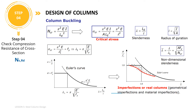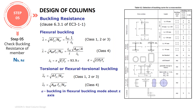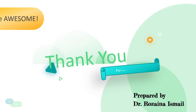In Step 4, we need to calculate the critical stress, slenderness ratio, radius of gyration, and non-dimensional slenderness in order to determine the compression resistance of cross-section NcRd. In Step 5, we need to calculate the reduction factor in order to determine the buckling resistance of member NbRd. The reduction factor must be less than or equal to 1. The reduction factor depends on the imperfection factor for the respective buckling curve. Neglect buckling if lambda-bar is less than or equal to 0.2, or if the applied design force NEd is less than or equal to NCR multiplied by 0.04. Selection of buckling curve for a different cross-section can be referred to in the table. Thank you for your attention. You are awesome!